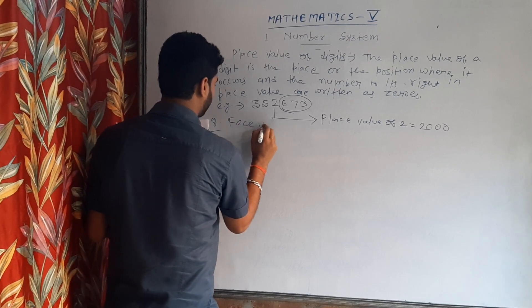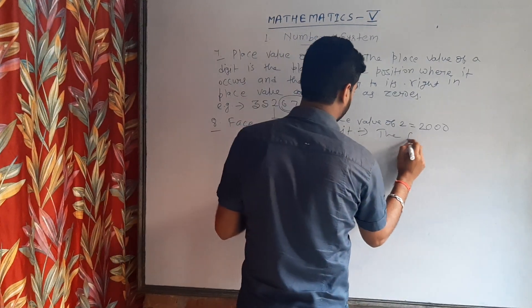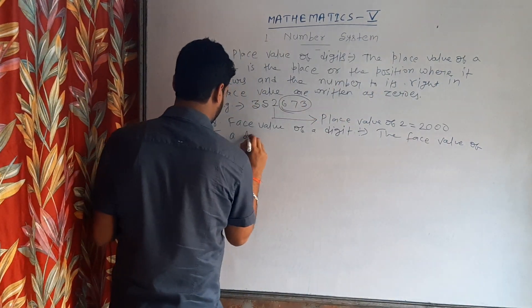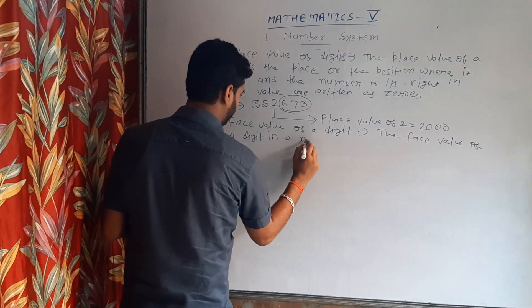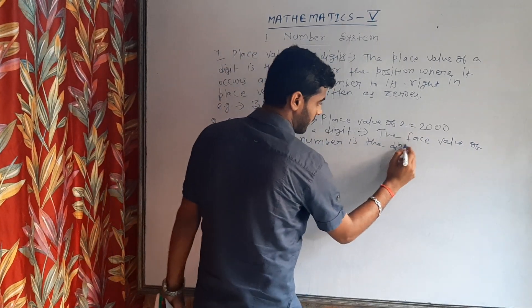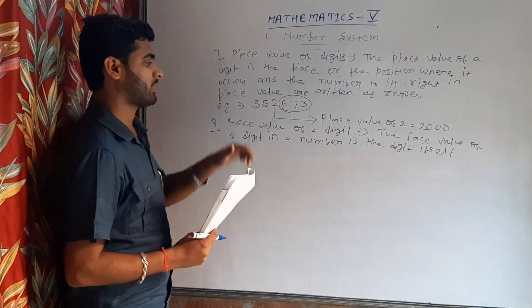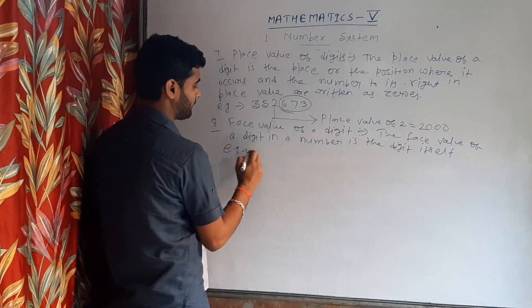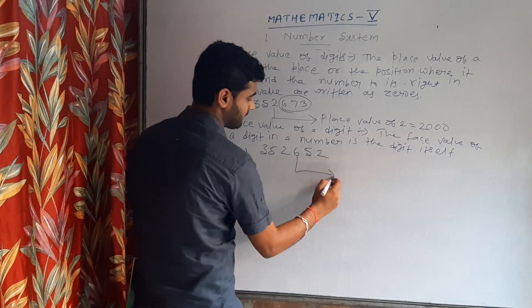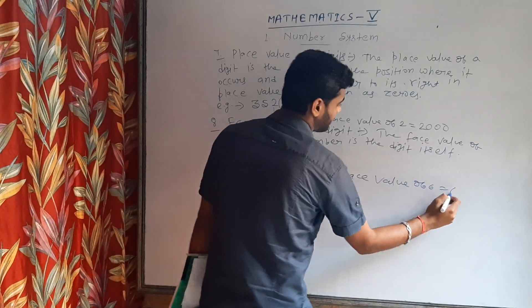Face value of a digit: the face value of a digit in a number is the digit itself. As an example, if you write the face value of 6 in a number, the face value of 6 is equal to 6.